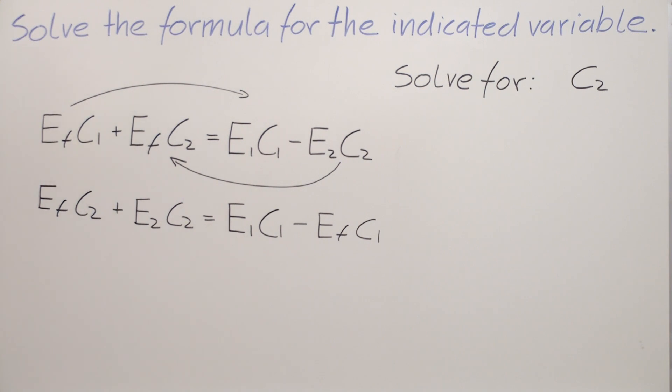Take a look. We have C2 in two terms. C2 is multiplied to EF and C2 is also multiplied to E2. We have to factorize C2 from these two terms.